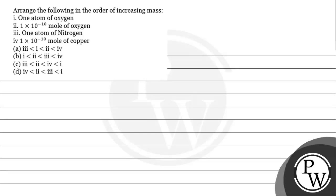Hello students, let's read this question. The question says: arrange the following in the order of increasing mass. Option 1: 1 atom of oxygen. Option 2: 1×10⁻¹⁰ moles of oxygen. Option 3: 1 atom of nitrogen. Option 4: 1×10⁻¹⁰ moles of copper. Options are given to us.